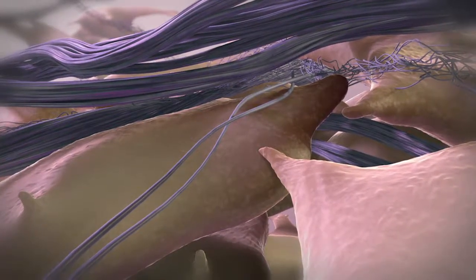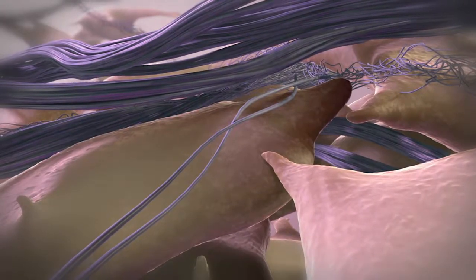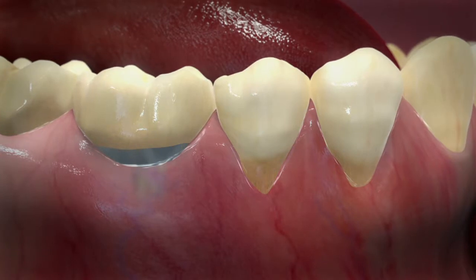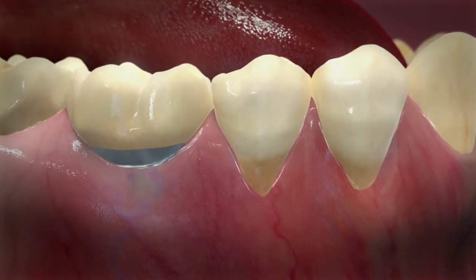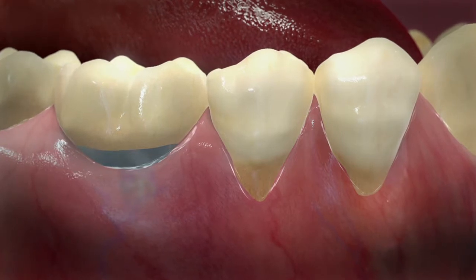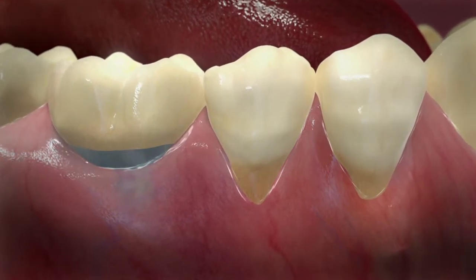GenTuit is a living cellular sheet composed of allogeneic cultured keratinocytes and fibroblasts in bovine collagen matrix and the first living product FDA approved for oral regeneration. GenTuit is advancing treatment options for mucogingival conditions and loss of keratinized gingiva around teeth, implants, or on edentulous ridges.